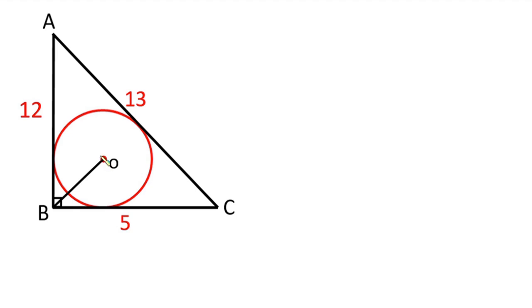Hello everyone! In this video, we have this nice plane geometry problem. We have this right angle triangle ABC. Then within this right angle triangle, there's a circle with center O. And we have to find the distance between B and O.